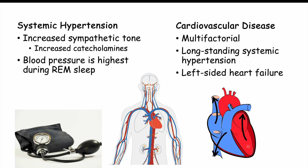Long-standing, untreated systemic hypertension leads to left-sided heart failure, causing a backup of blood into the pulmonary system — and that leads to particular signs and symptoms. These include dyspnea on exertion — shortness of breath during physical activity — orthopnea (shortness of breath when lying down flat), and paroxysmal nocturnal dyspnea, where patients wake up in the middle of the night completely out of breath. All of these occur from left-sided heart failure.